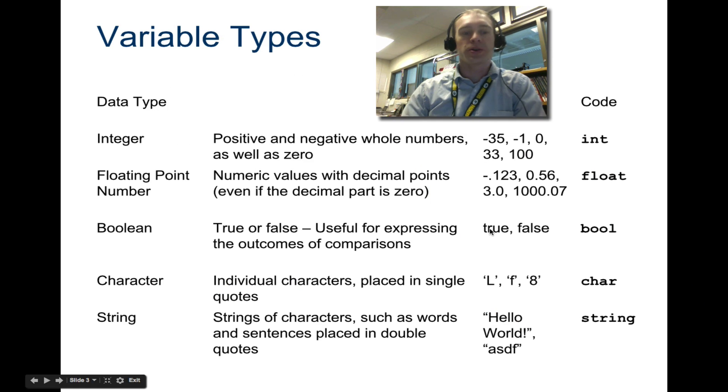So this little table just shows what different data types there are: ints, floating points, boolean, character, strings. You can pause this and take a look at it if you have interest for this, but right now we're just going to be using int.